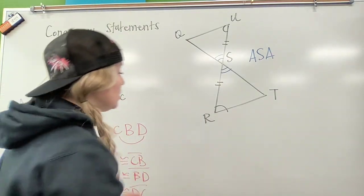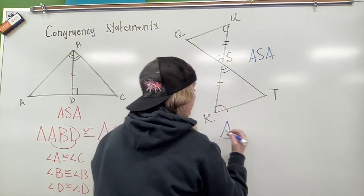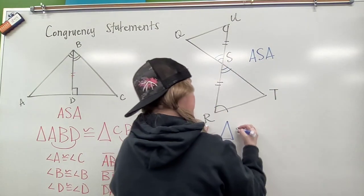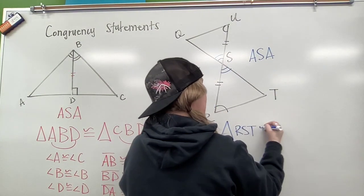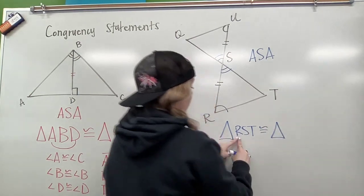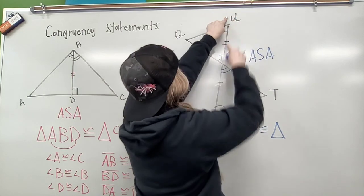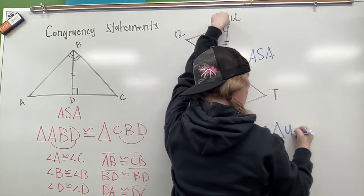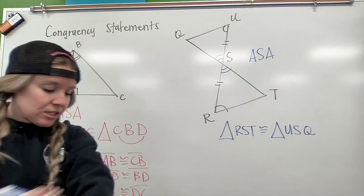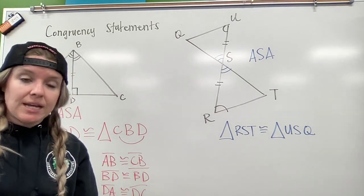So let's say I'm going to do triangle RST. It's congruent to triangle - if I'm starting at R, that means I have to start at U. So U-S-Q. That is one way I can write this congruency statement.